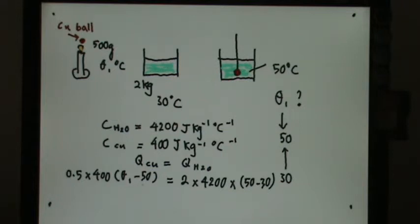So we have one complete equation. We can be quite smart in taking this: 100 times 0.5 is 50, 50 times 4 is 200. So it's 200(θ1 - 50) equals 8400 times 20, because 50 minus 30. You can cut off the zeros here and divide by 2 to get 42.